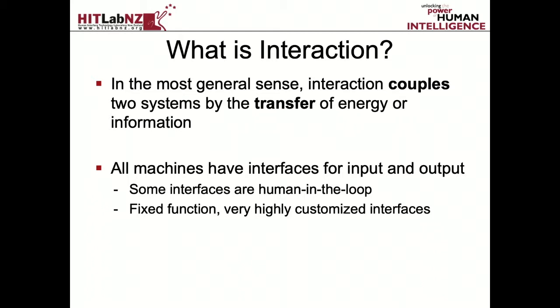Physics is full of interfaces between things, and all machines have an interface. Some of them are fixed function with no humans in the loop, like the windows here - there is a human in the loop but they're way off, called a building service engineer. They program the system for the amount of light, but then it has sensors, and if it gets really hot the windows will open. Some systems are human in the loop and real time, and that's mostly what we're interested in - two systems where one of them is a human. Some systems are very general purpose, like your smartphone.